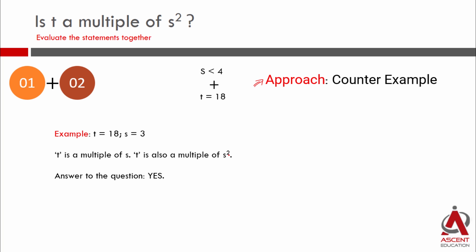Here is the first example. t is equal to 18. s is a prime number less than 4. I am taking s to be equal to 3. So s square is equal to 9. Is 18 a multiple of 3? Yes. Is 18 a multiple of 9? Yes. So t which is 18 is a multiple of both s and s square. Answer is yes.